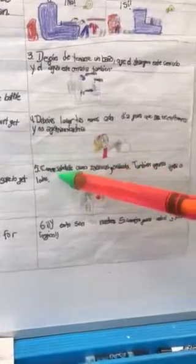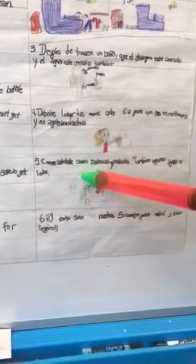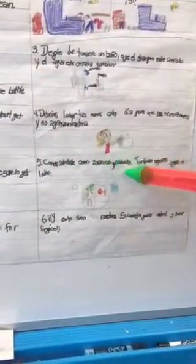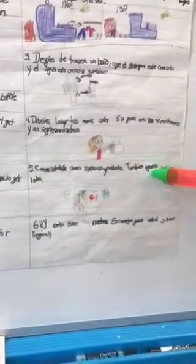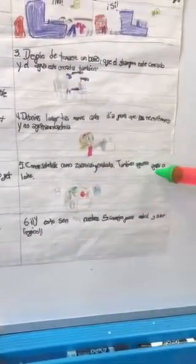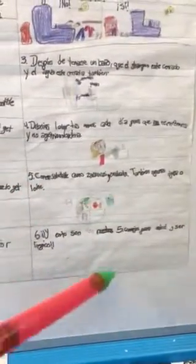Comer saludable como zanahorias, ensalada, también aganzar agua o leche. And these are our five tips for health and grooming. Y estos son nuestros cinco consejos para salud y ser limpios.